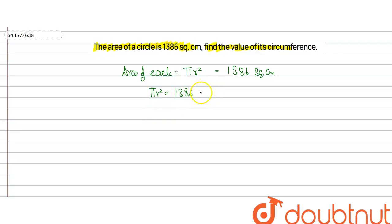We get r squared equals 1386 divided by π centimeter squared, which equals 441 centimeter squared. So the value of r squared is 441 centimeter squared, and the value of r is 21 centimeters.